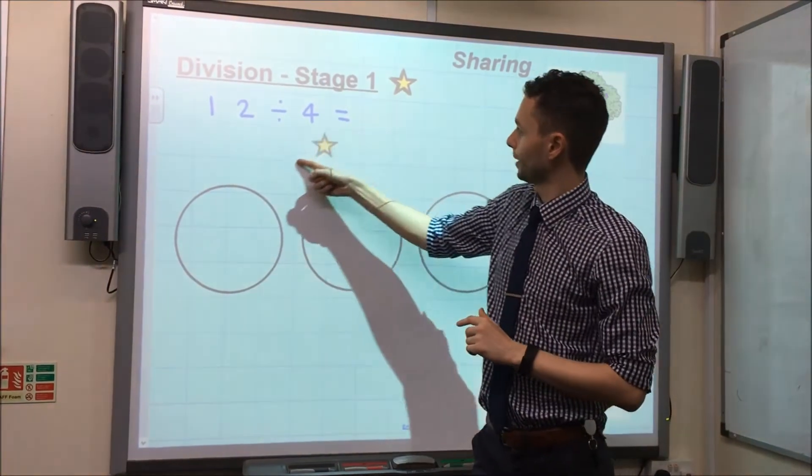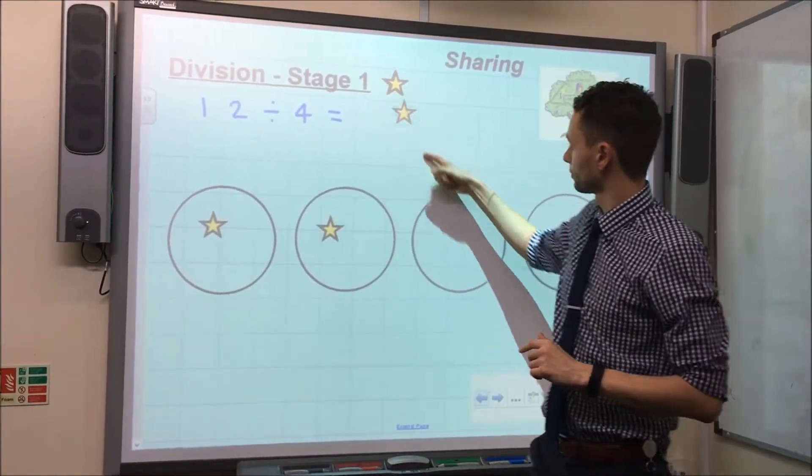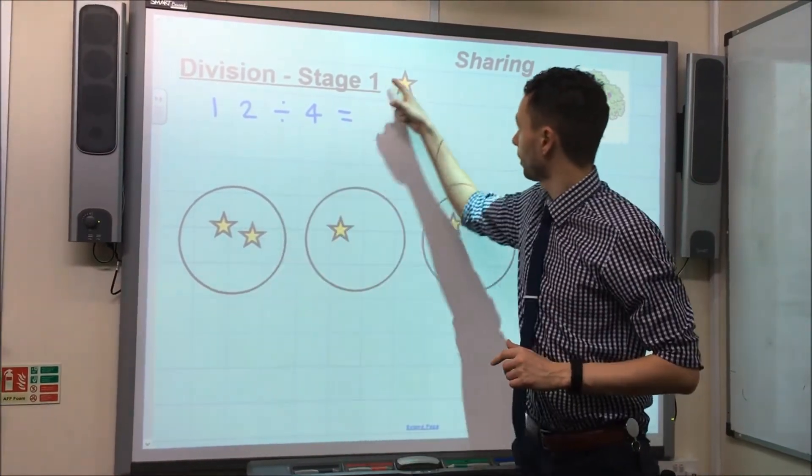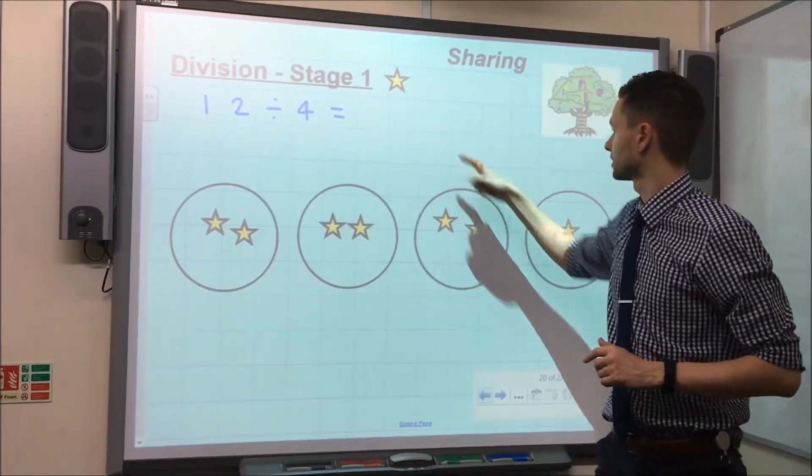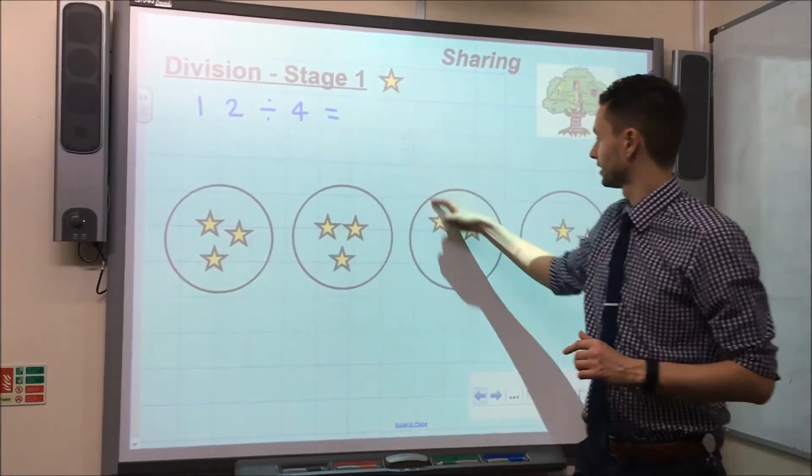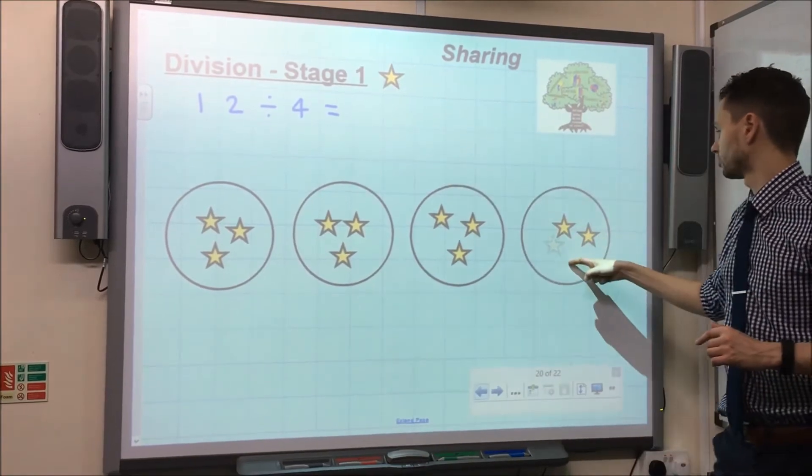So let me count them out. I've got 1 in that section, 2, 3, 4, then I've got 5, 6, 7, 8, 9, 10, 11 and 12.